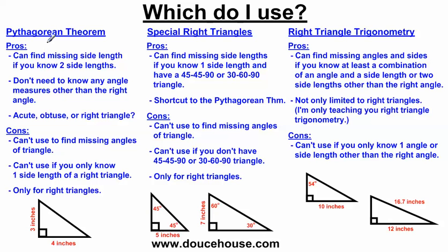I'm going to start with the Pythagorean Theorem because that's what you're probably most familiar with. The Pythagorean Theorem is a squared plus b squared equals c squared. You learned about this one well before you learned about special right triangles and right triangle trigonometry according to my experience in teaching math. The pros of using the Pythagorean Theorem are: if you know two sides out of three sides on a right triangle, then you can find the missing side. We could label these guys a and b and figure out what c is.